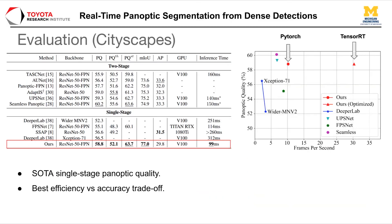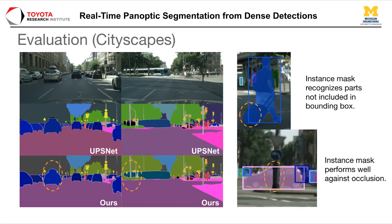We evaluate our model on panoptic benchmarks. On Cityscapes, our model achieves state-of-the-art single-stage panoptic quality while featuring real-time inference speed. With its fully convolutional design, inference can be easily accelerated by commercial network accelerators such as TensorRT to get an even faster speed. Our model performs well with occlusion and can segment an instance with better geometry compared to its bounding box.